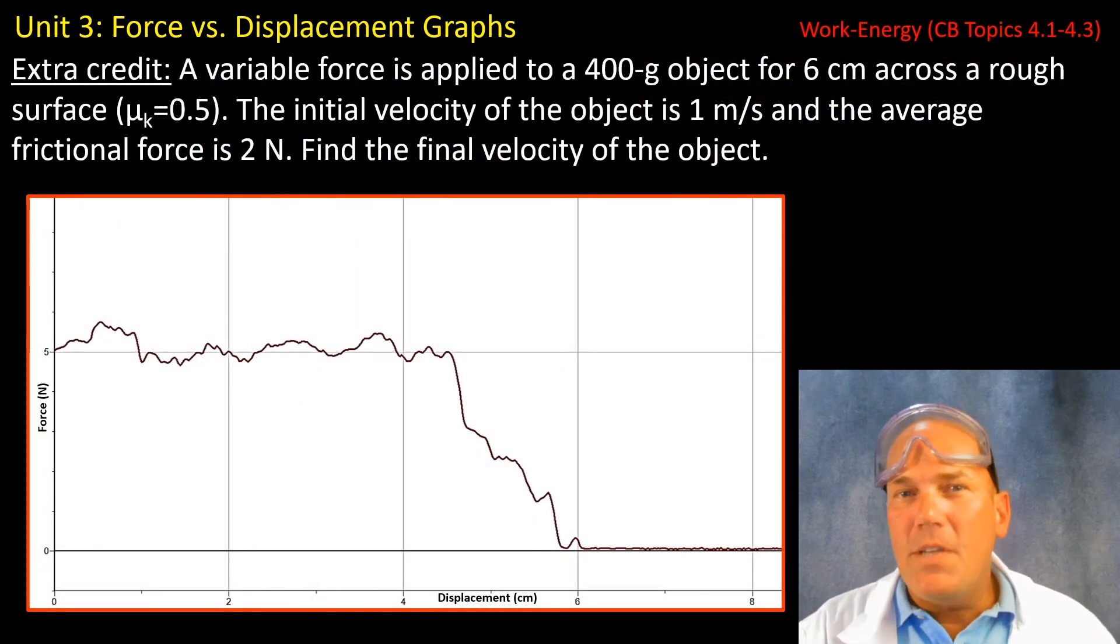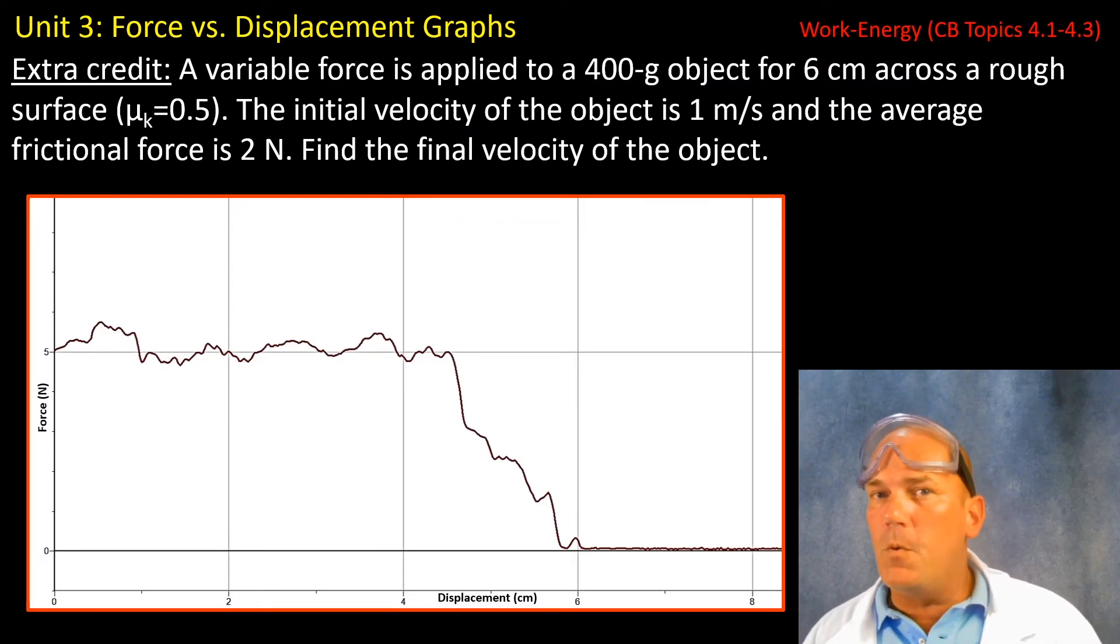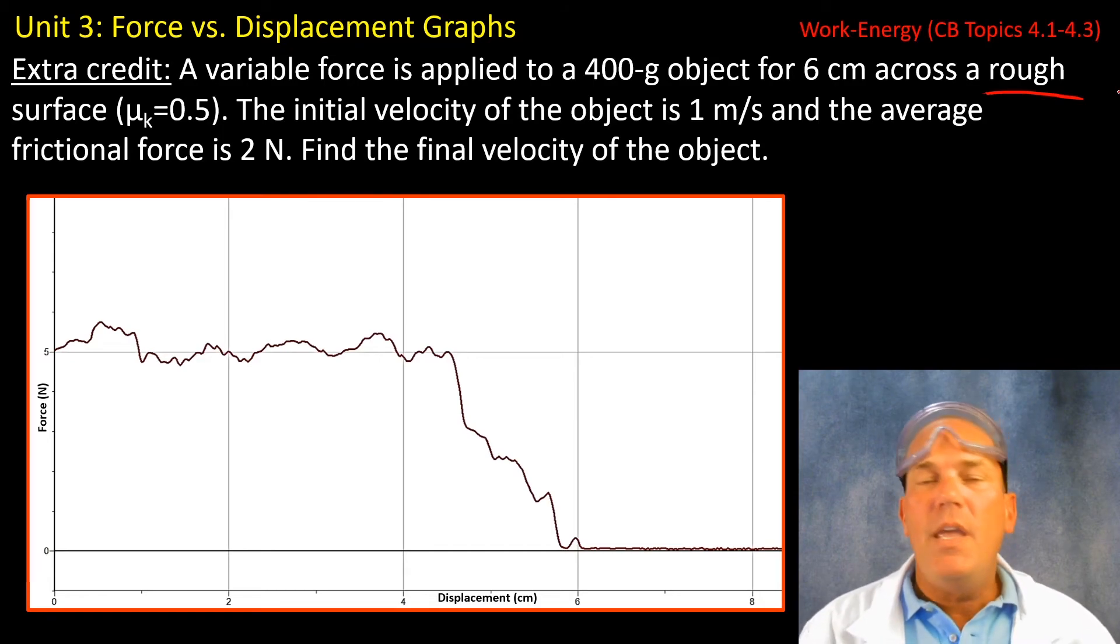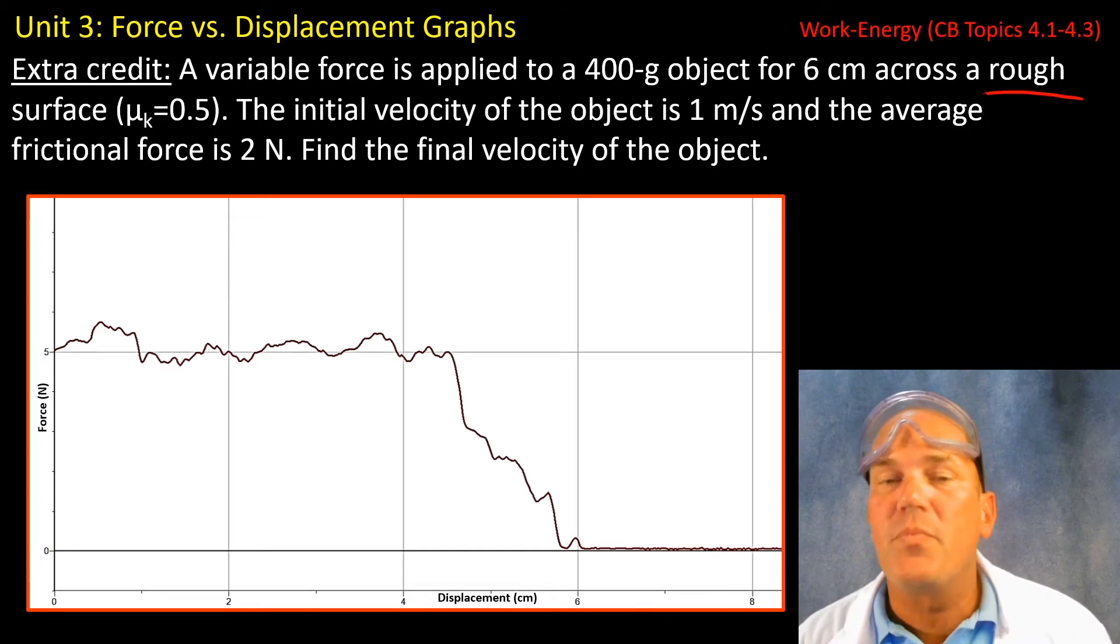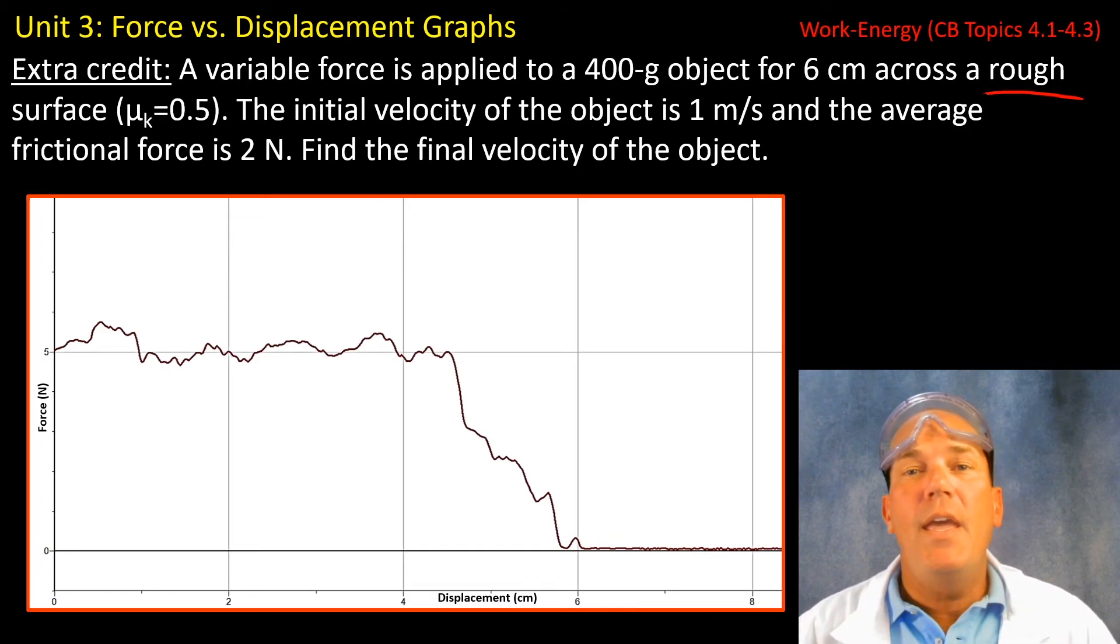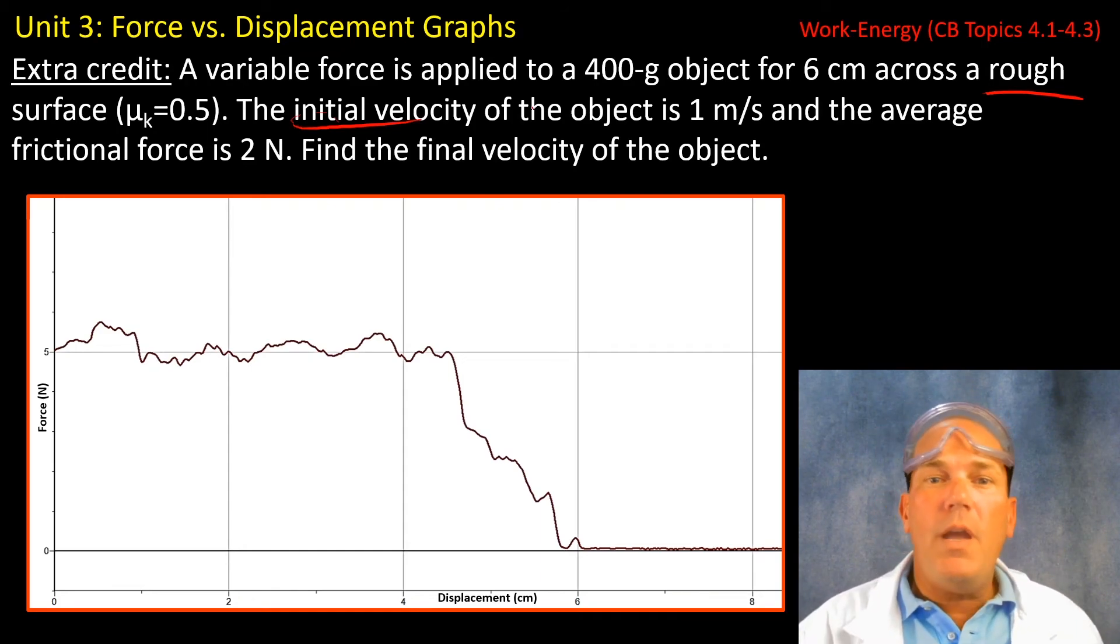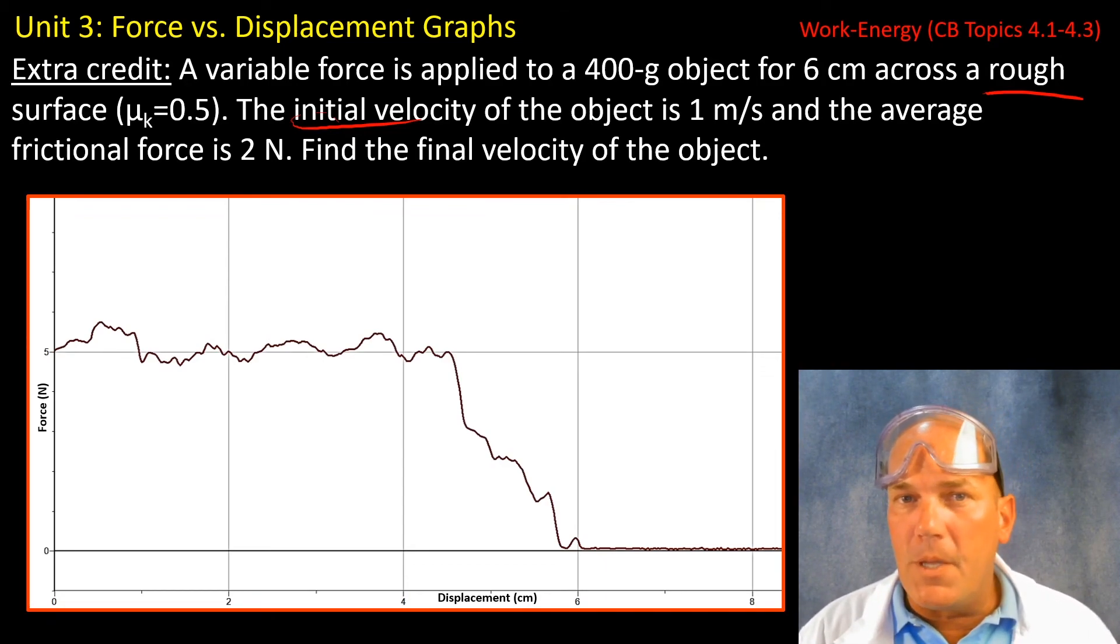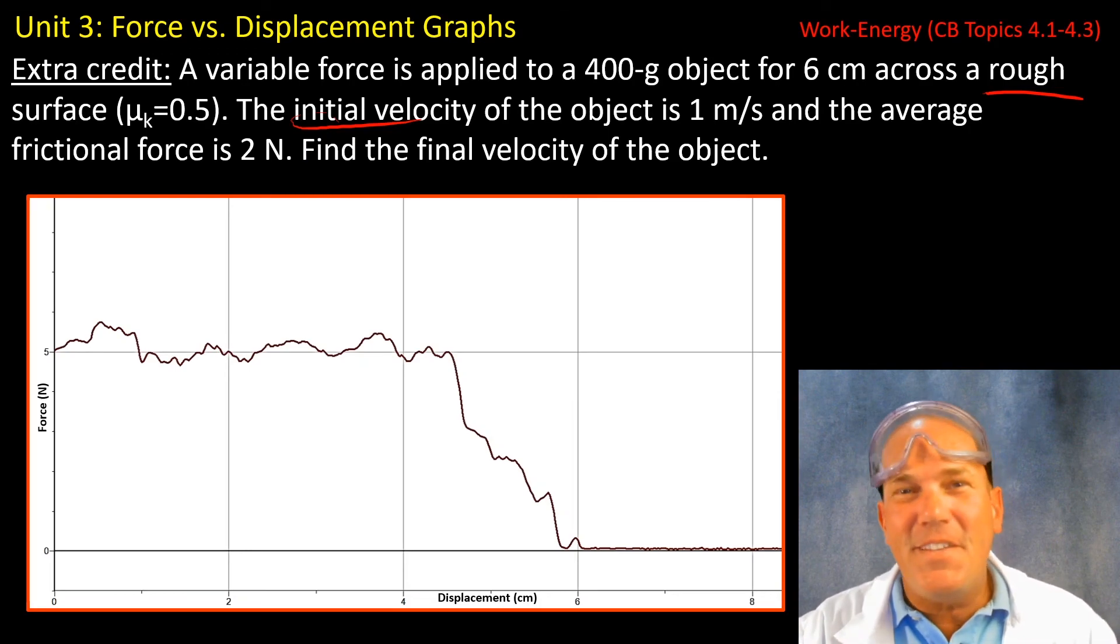Now, here's an extra credit opportunity. Again, we have a variable force being applied to an object for a given distance, except this time it is across a rough surface. And you're given the coefficient of kinetic friction to be 0.5. You're also given an initial velocity in this particular problem. And you are asked to find the final velocity of the object. So why don't you go ahead and work this one out for me and bring it to me first thing in the morning.